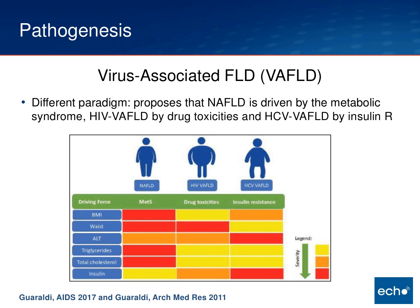Another paradigm is virus-associated fatty liver disease, put forth by Grualdi. He would classify non-alcoholic fatty liver disease driven by factors associated with metabolic syndrome — being overweight, high cholesterol — as non-HIV-infected NAFLD. HIV infection as viral-associated liver disease might be driven primarily by drug toxicities and is associated with high waist circumference. HCV is another viral-associated fatty liver disease driven primarily by insulin resistance, with elevated ALTs and insulin resistance being key.